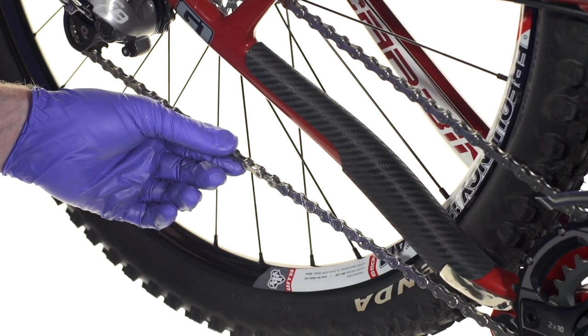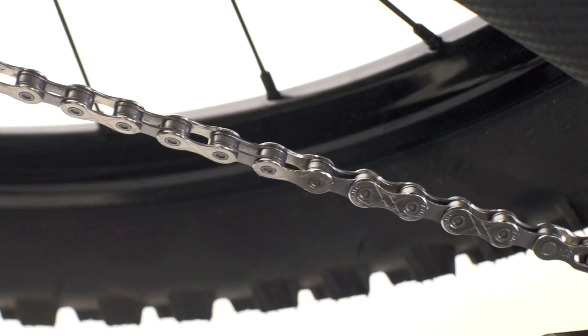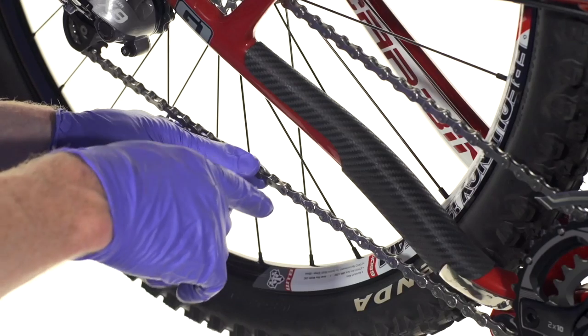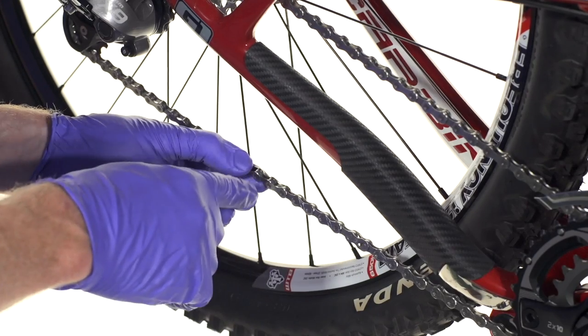So your chain's been damaged out on the trail. You had a bad shift and some links got bent. So the first thing to do is to identify the bad ones. And it looks like the damage is isolated to this area.